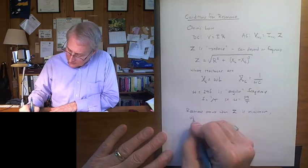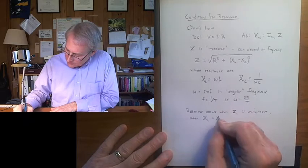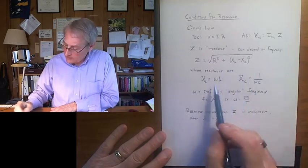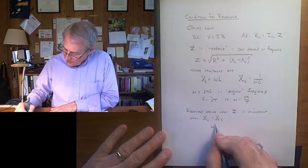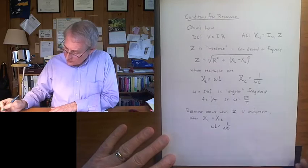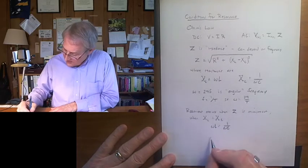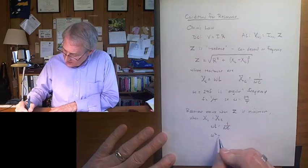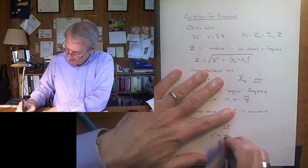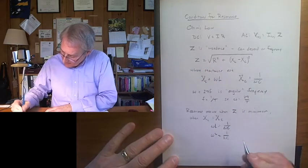And that occurs when the reactances are equal and cancel each other out. Well, we can set these two things equal to each other. Omega L equals 1 over omega C. And I'm going to solve for the frequency. So that's omega squared equals 1 over LC. 2 pi is coming, my brain was getting there. Okay, I'm going to take the square root of this.